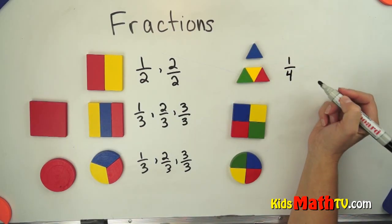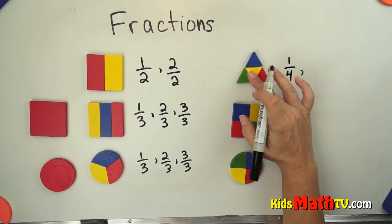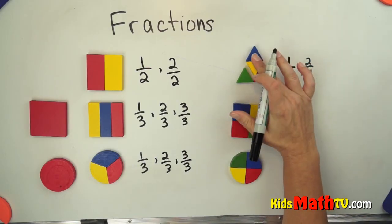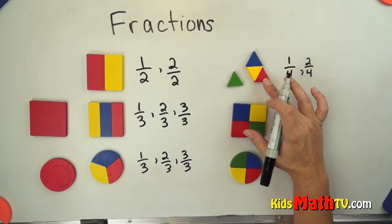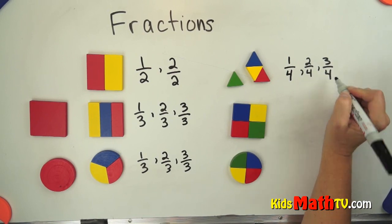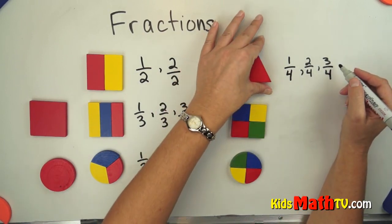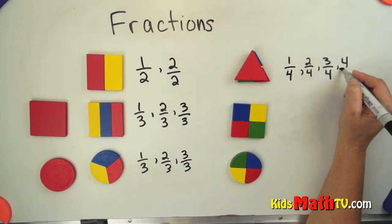I can have one out of four. I can have two out of four. I can have three out of four. Or the whole thing put back together is four out of four.